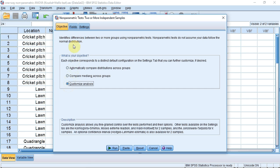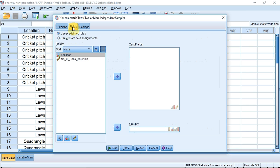I'm now going to go up to the Fields tab and tell SPSS which variables I want it to analyse. The Test Fields variable is the number of daisy plants, Bellis perennis. I'm going to select that and enter it into the Test Fields box using the selection arrow. We're going to divide that data up into four groups, and the information for that is stored in the Location variable, which I'm going to select, and I'm going to enter it into the Groups box.